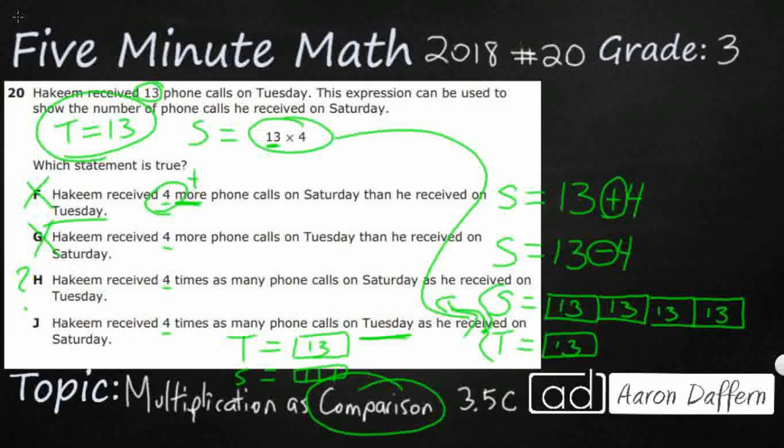Because we have four times as many on Tuesday as Saturday. And this, unfortunately, is going to represent division. This is going to be Saturday equals 13 divided by four, which isn't even a fact, which means the answer would have to be a decimal.